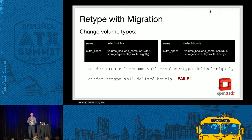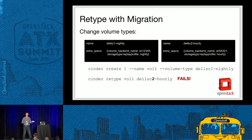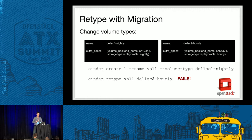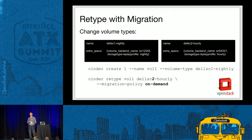On the other hand, if in the extra specs I've explicitly set the 'volume_backend_name' to a different array — one set of digits on the left, a different set on the right representing two separate storage arrays — then doing a retype would fail because it has to go to a different array. You can do a retype with migration policy 'on-demand', which tells Cinder to retype the volume and migrate it if necessary. You need to explicitly specify this because depending on volume size and destination, it could be a big operation.